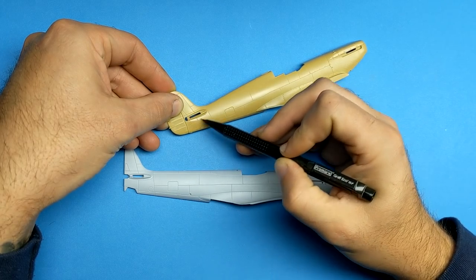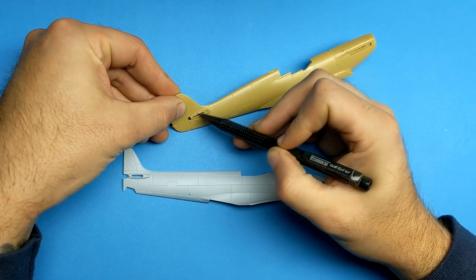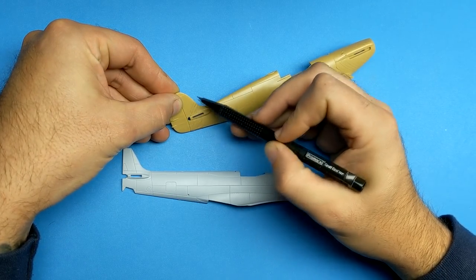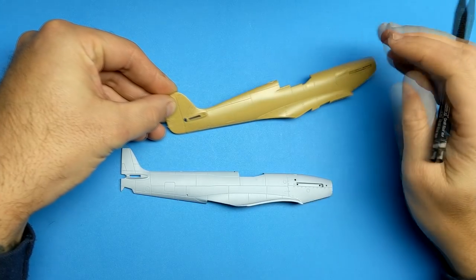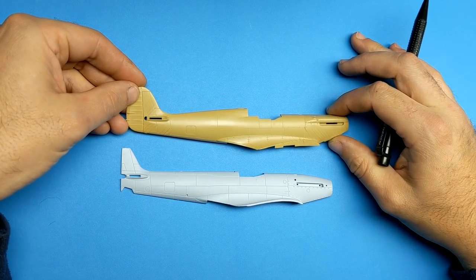Initially I thought this was going to be a very easy conversion to do because Airfix does a Mark 15 Griffin engine Spitfire and then they do a Mark 17 Seafire and there's been a previous build where someone just simply swapped the wings from the kits.